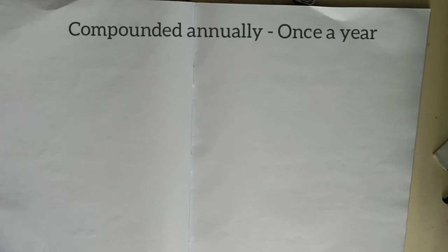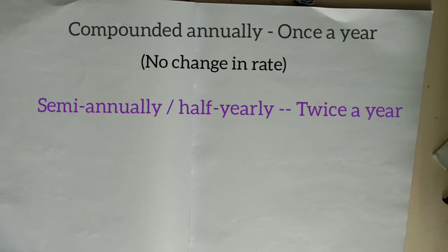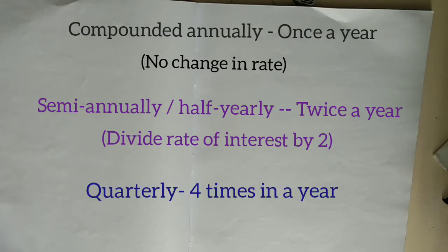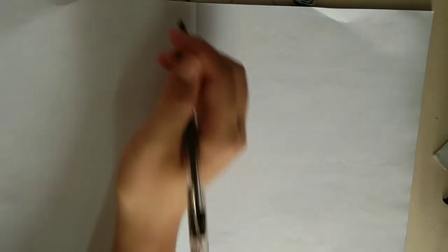Over here we can see it says compounded annually. If it's annually, it means once a year, so you don't have to make any changes. However, if the question says semi-annually or half yearly, it means two times a year, so whatever rate of interest they give you, you have to divide it by two. If it says compounded quarterly, it means four times in one year, so you have to divide it by four.